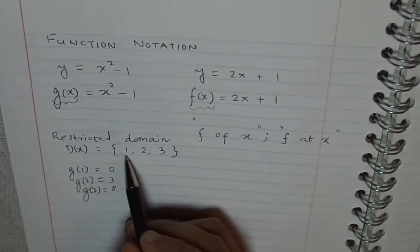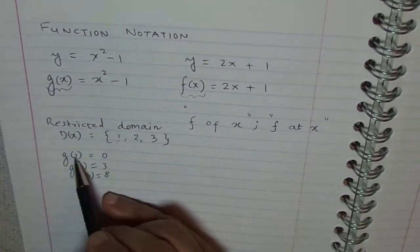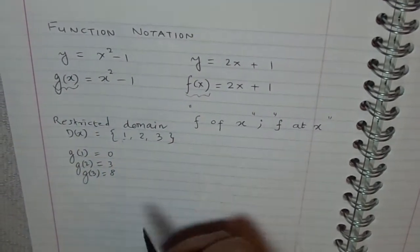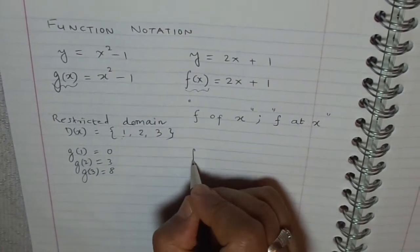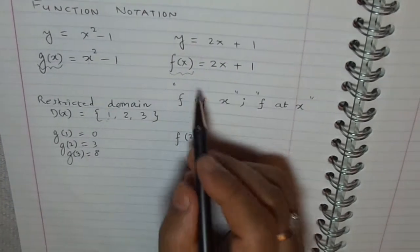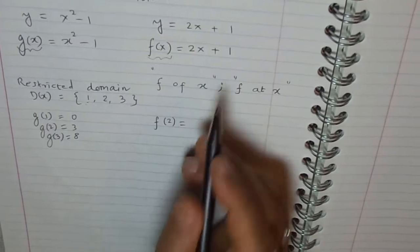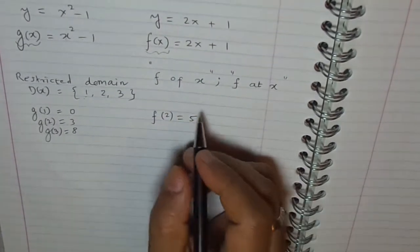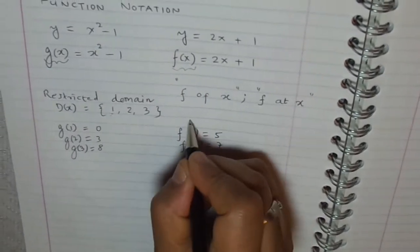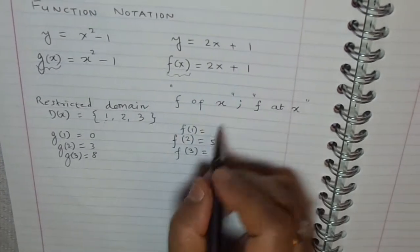To evaluate or to find the value of a function for a given value of x, the thing which you have to do is just substitute x as this number. So, here, for 1, g of 1, 1 squared minus 1, 0. Same as the case here. If you want to find what is f of 2, in that case, let's plug in 2 here. f of 2 is 2 times 2 plus 1, which is 5. Similarly, you can find different values. Let's calculate f of 3 which is 7 and f of 1 which is 3.